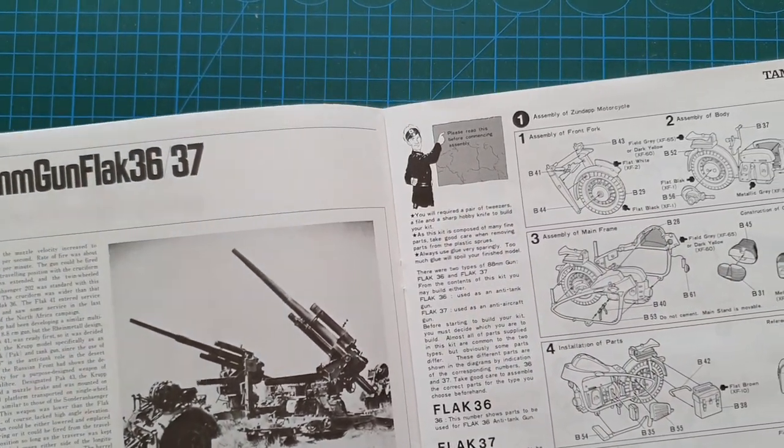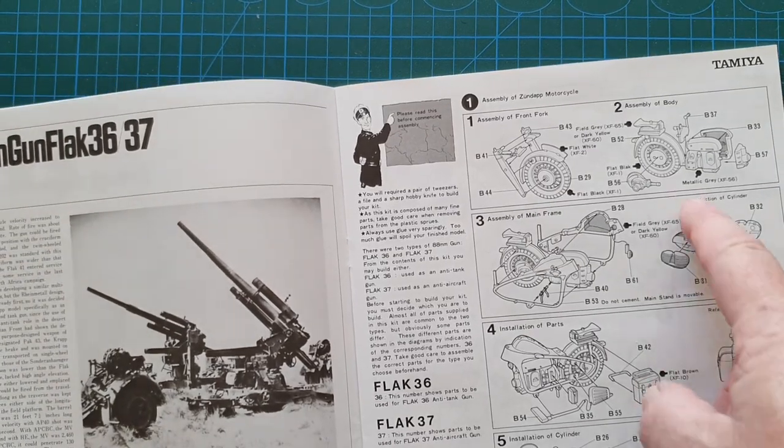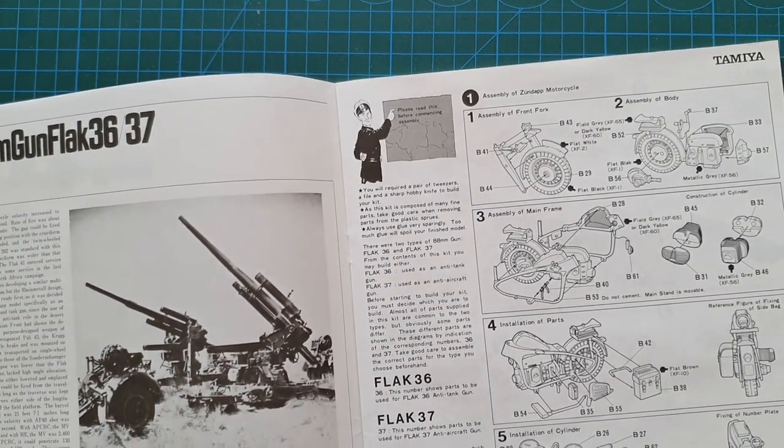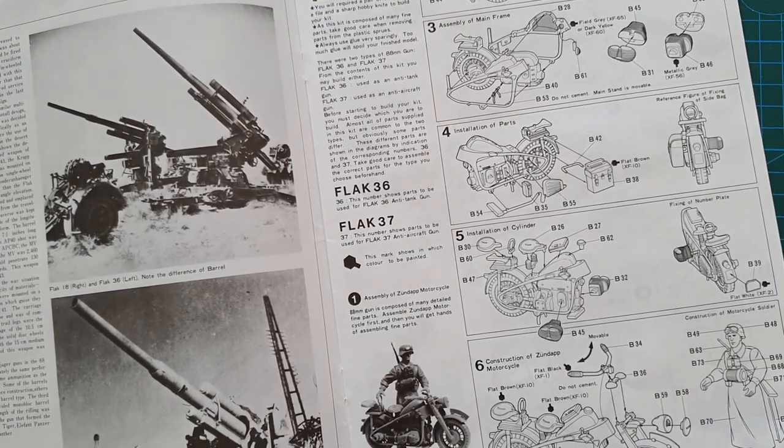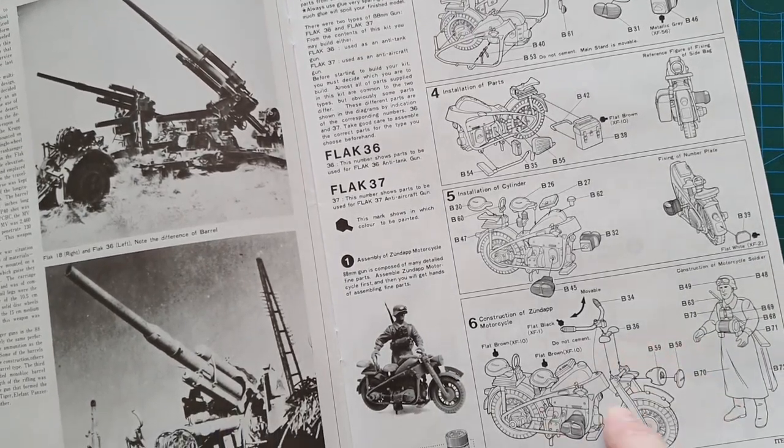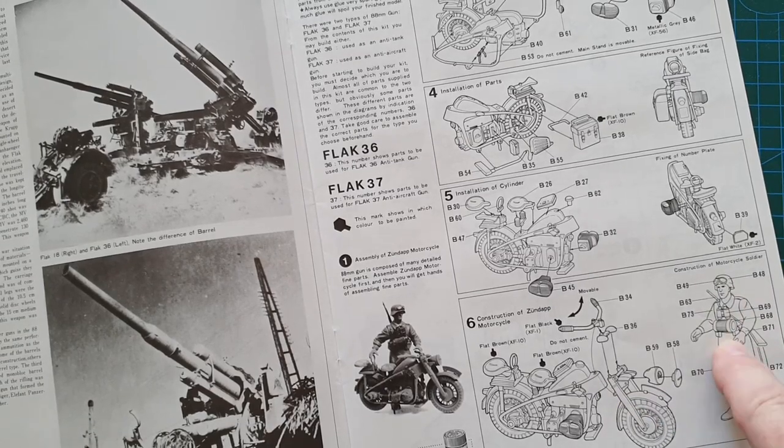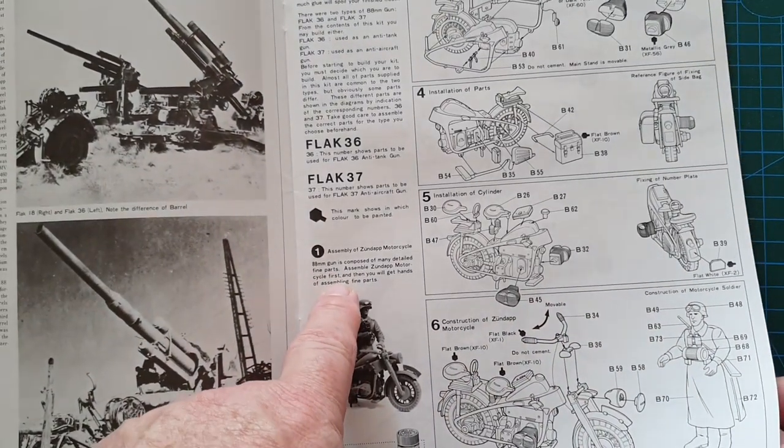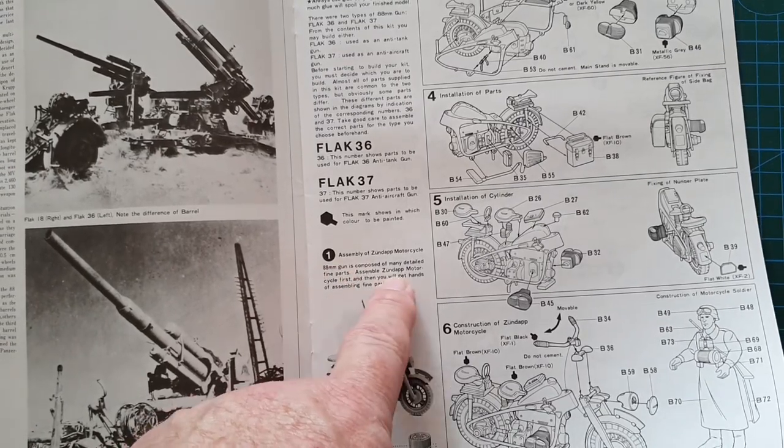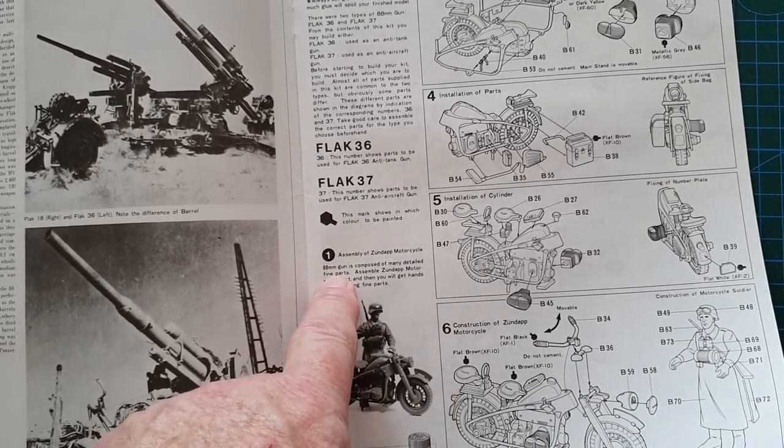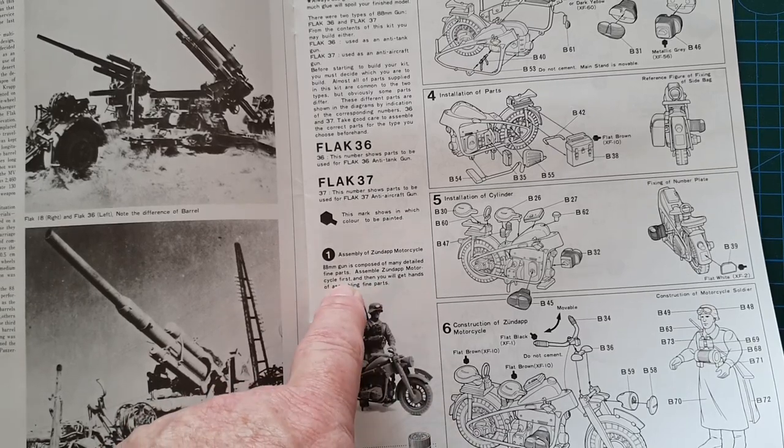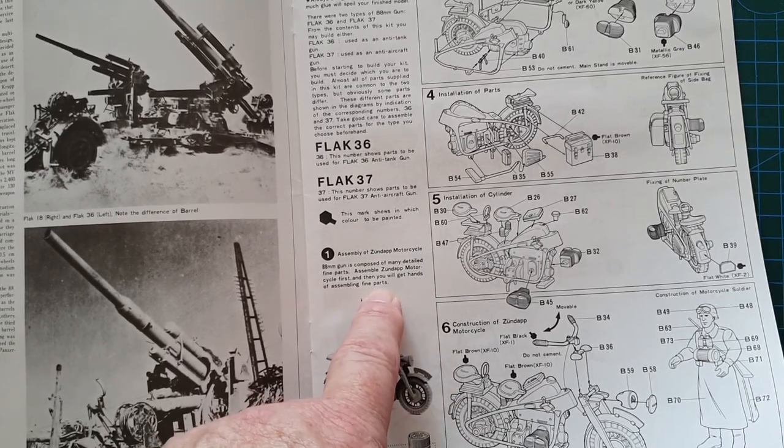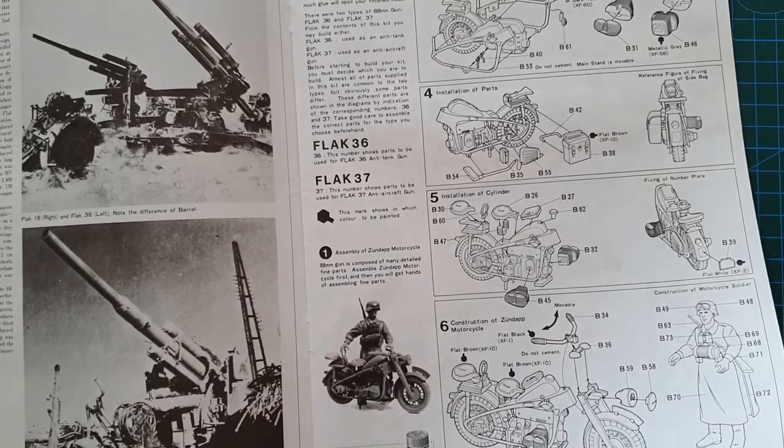These instructions are from the 70s and we start off with construction of the Zundapp which is fairly basic and straightforward. If you wanted to you could add a little bit of wiring to it but it's not necessary. It does say here '88 millimeter gun is composed of many detailed fine parts. Assemble Zundapp motorcycle first and then you will get hands of assembling fine parts.' I think they mean hands-on experience.